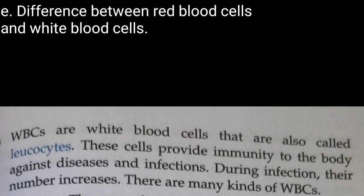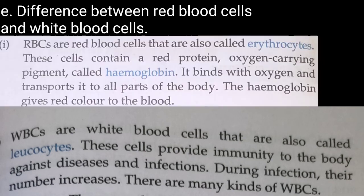Difference between red blood cells and white blood cells. Red blood cells, or RBCs, also called erythrocytes, contain a red protein oxygen-carrying pigment called hemoglobin. Hemoglobin binds with oxygen and transports it to all parts of the body. Hemoglobin gives the red color to the blood.